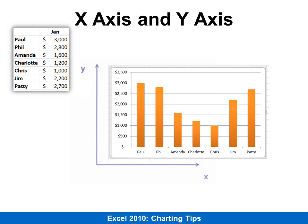It's also important to know the difference between X and Y. X goes across the bottom of the chart — it's also known as the horizontal axis. And Y goes up the side, also known as the vertical axis. Here's a good way to remember: Why are you running up the stairs? Y is running up the stairs.